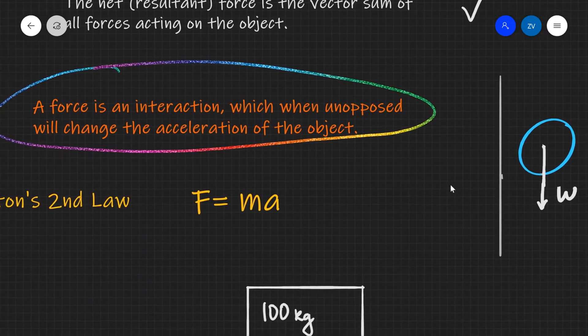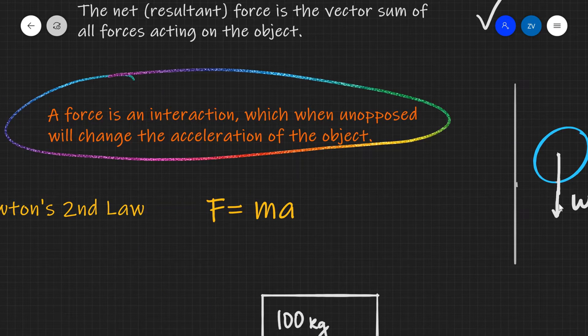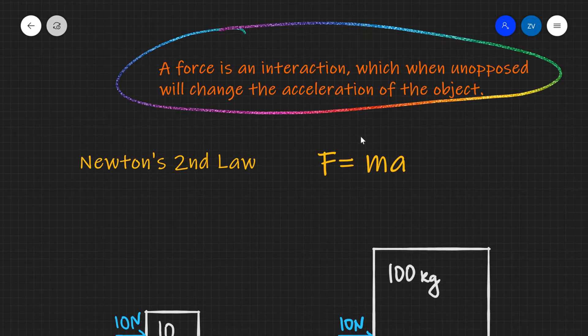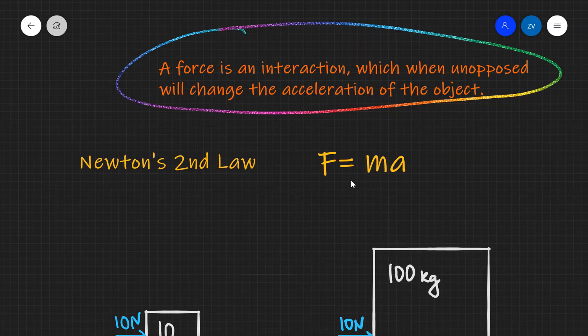So a force is an interaction which, when unopposed, will change the acceleration of the object. This is really well summarized by Newton's second law, which is written down over here. And it states that the net force acting on an object is proportional to the acceleration. That constant of proportionality is the mass.